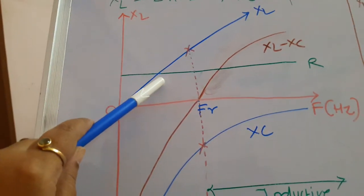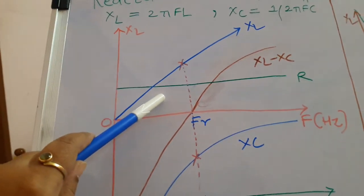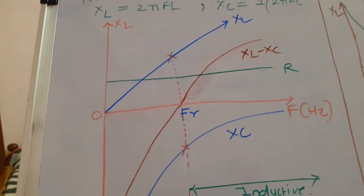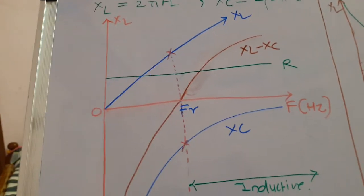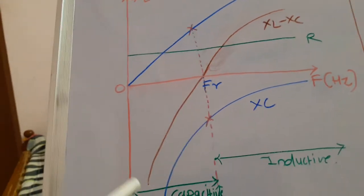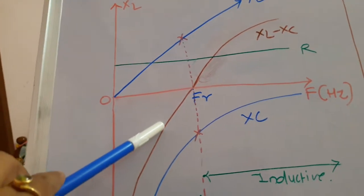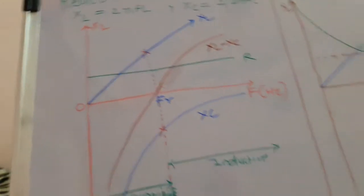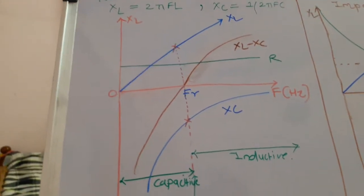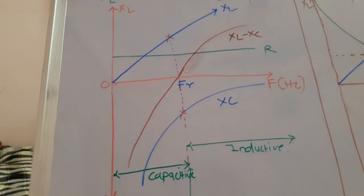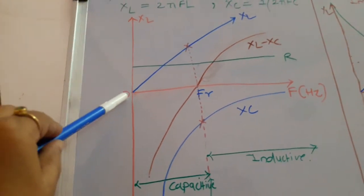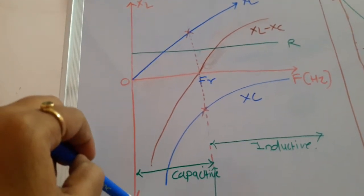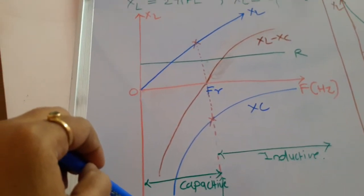So we have the inductive reactance as a straight line through origin, the capacitive reactance as a negative exponential curve, and the resistance as a green straight line. If we calculate XL minus XC, the resultant has a brown colored curve — slightly parabolic and slightly linear. The shape depends on the values of XL and XC. At the origin, inductive reactance is very small whereas capacitive reactance is very large in the negative direction.